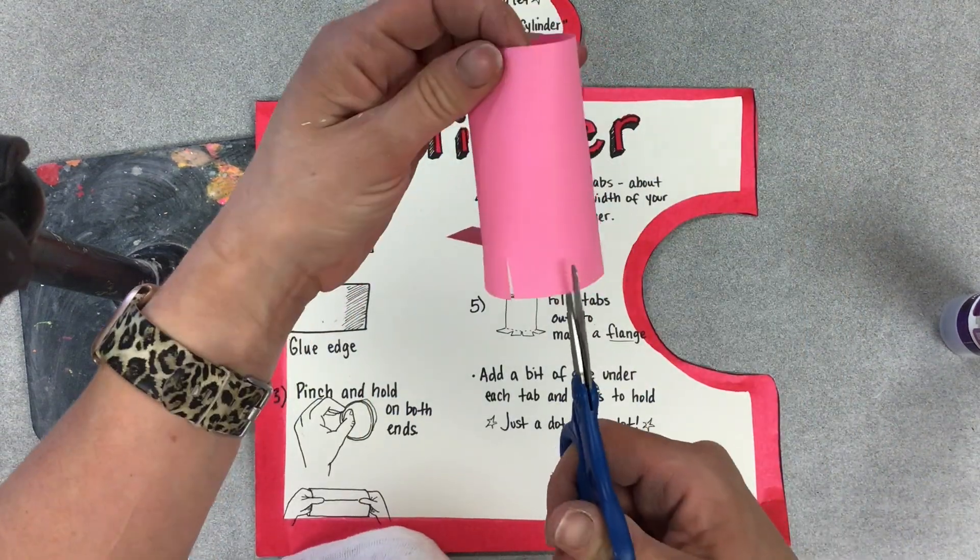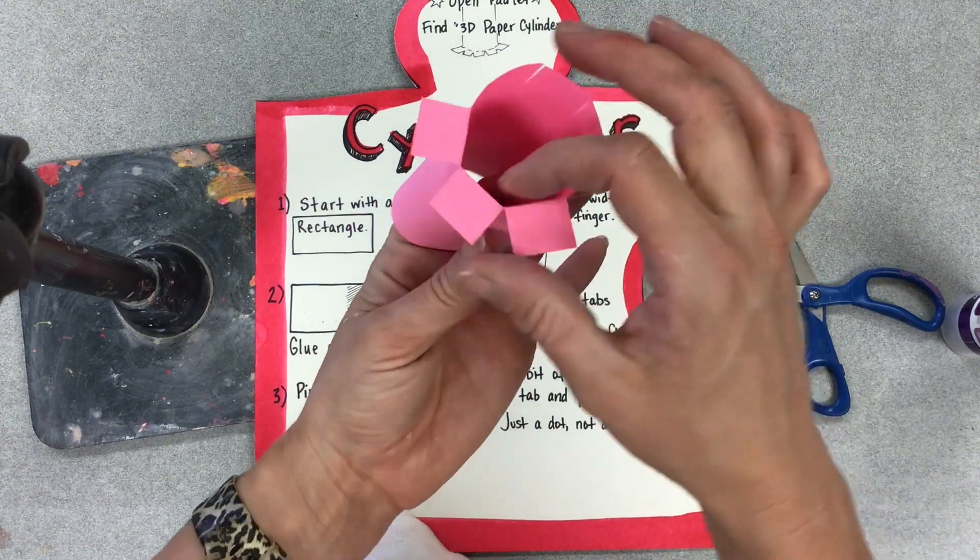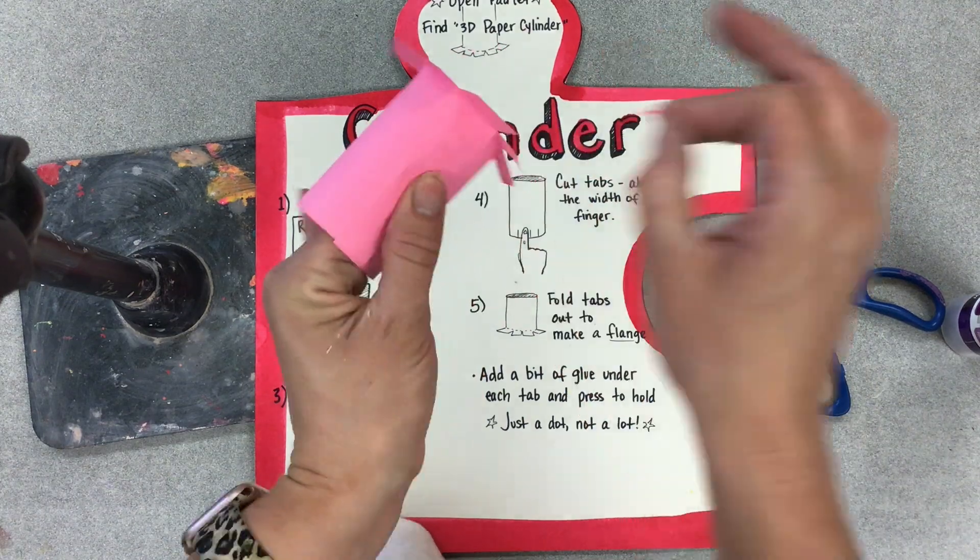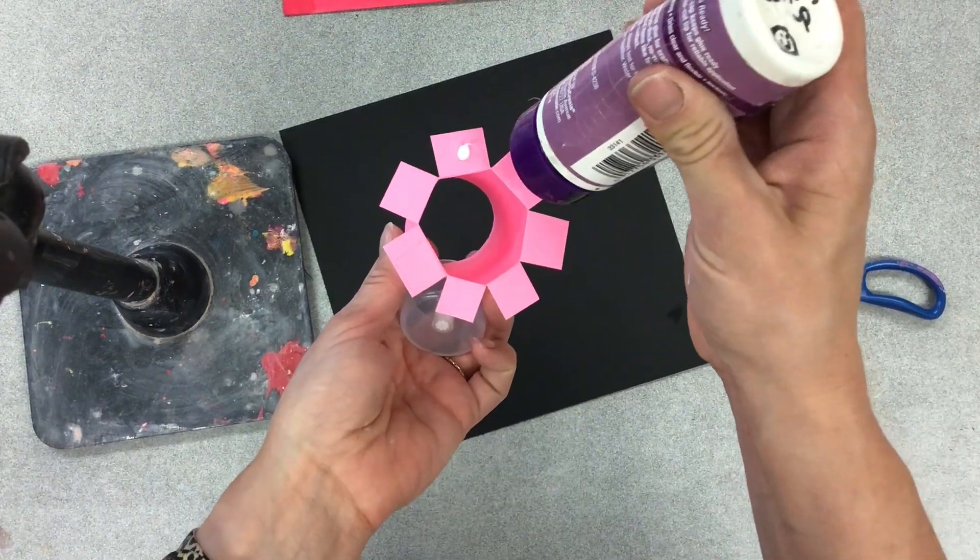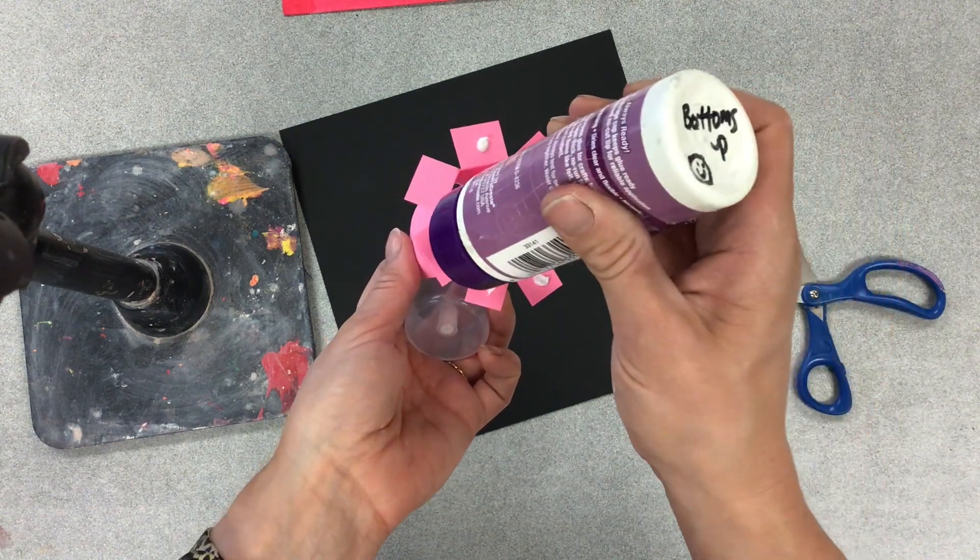Cut and crease the tabs to create a flange. Add a bit of glue under each tab and press and hold to your base.